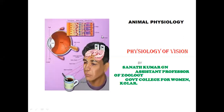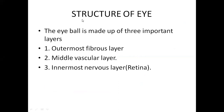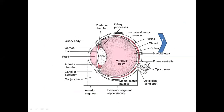Hello everyone. Today in animal physiology we will be discussing the physiology of vision. Before discussing the physiology of the eye, it is important to understand the structure of the eye. The eye is made up of three important layers: the outermost fibrous layer, the middle vascular layer, and the innermost nervous layer. The retina is the innermost layer, which is very important for understanding the physiology of vision.